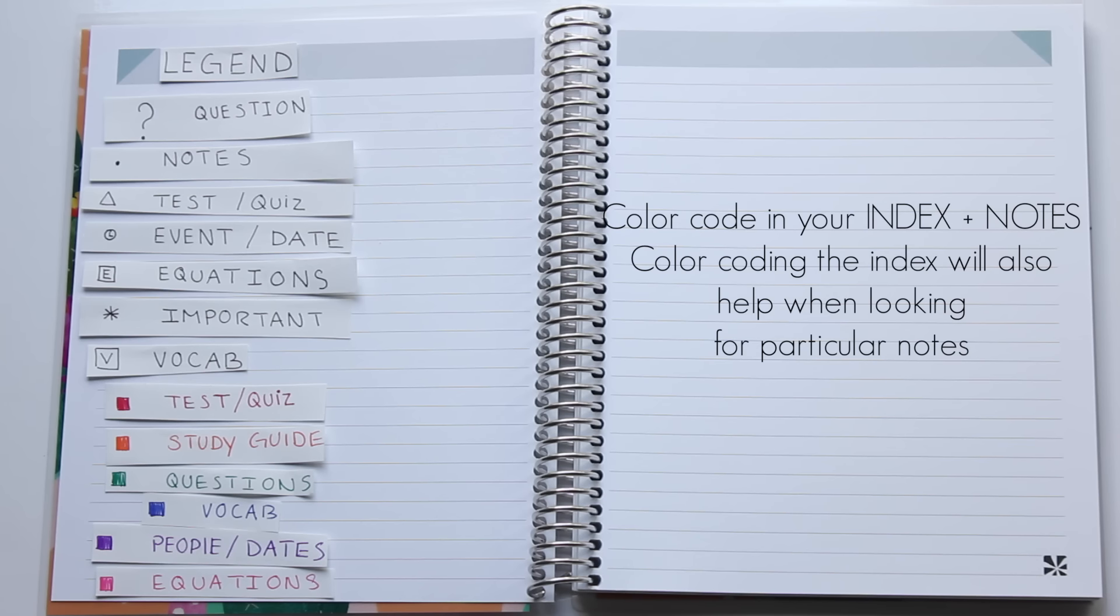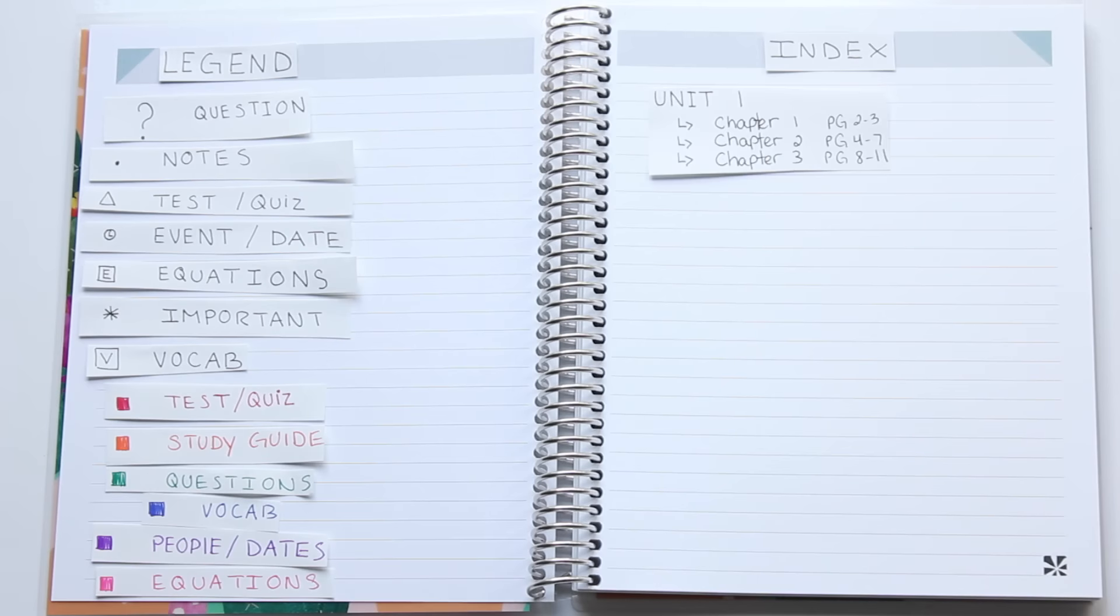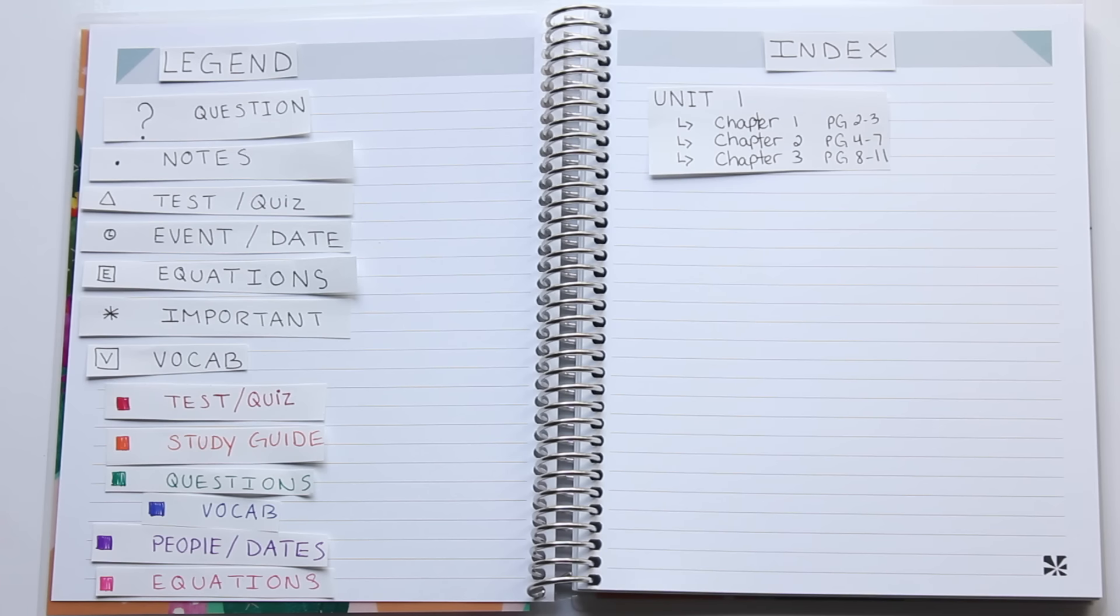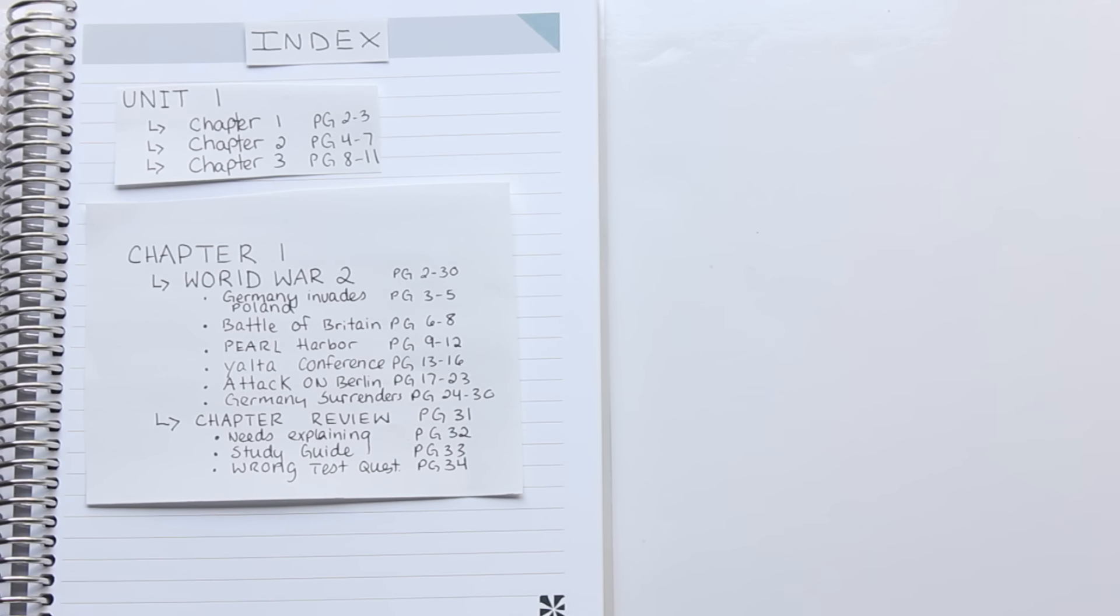Now the index is going to keep track of all of your units and everything that you're studying. I'm going to show you a few different ways that you can set up your index. This is by far the most simplest, very similar to a table of contents in your textbook. But I like to take it a step further by adding some more indicators. As you can see here, I just divide up the chapters in the book and the page numbers.